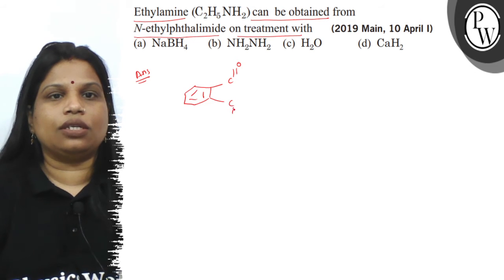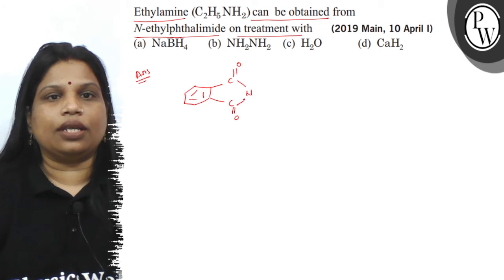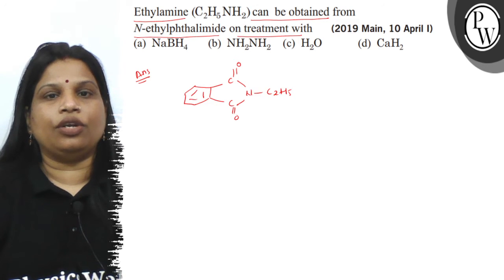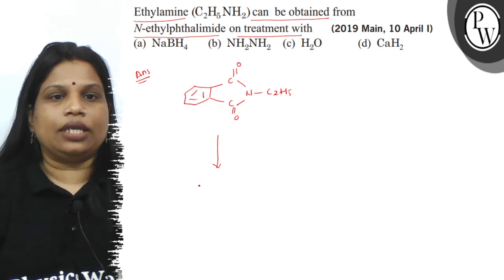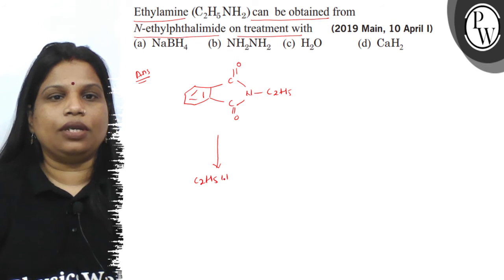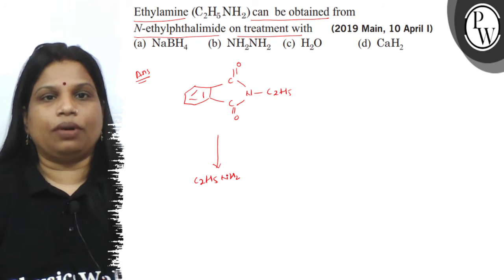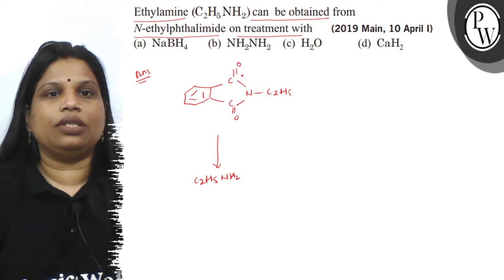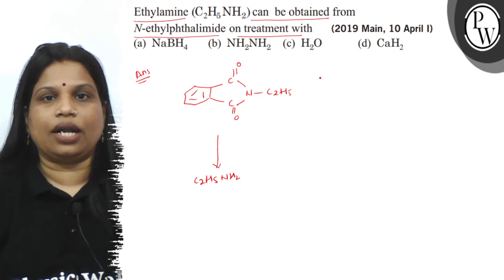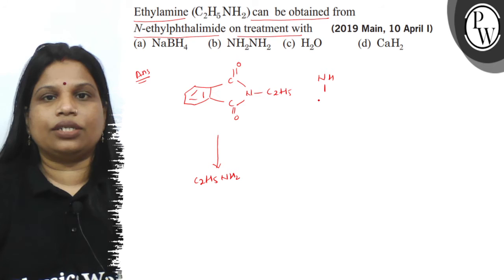If you see the structure of N-ethyl phthalimide, this is the structure, and you have to produce ethylamine, which is a primary amine. This can only be possible when this molecule is treated with hydrogen, and the reaction proceeds in this way.